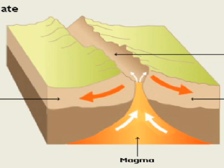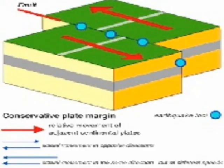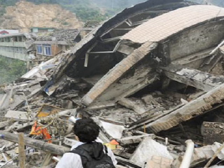And at conservative boundaries, two plates rub against each other, either in opposite directions or in the same direction, at different speeds. Only earthquakes are found at conservative margins. Wow, that's an awful lot of ways that they can happen. Indeed it is, but you need to know it all for your exams.